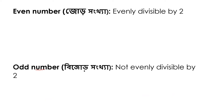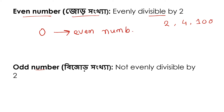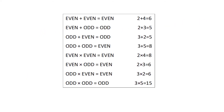Even number: a number that when divided by 2 leaves no remainder. Even numbers include 0. A number divisible by 2 with no remainder is even. Odd numbers are like 5, 9, 13, etc.